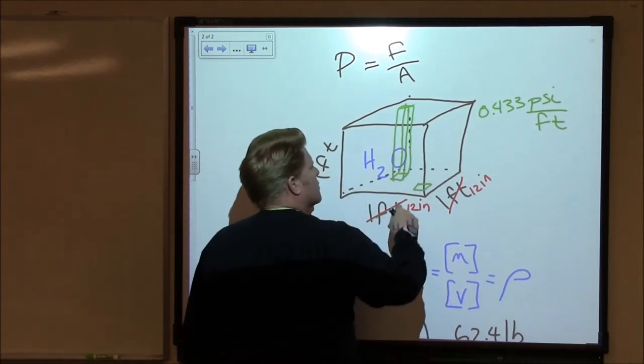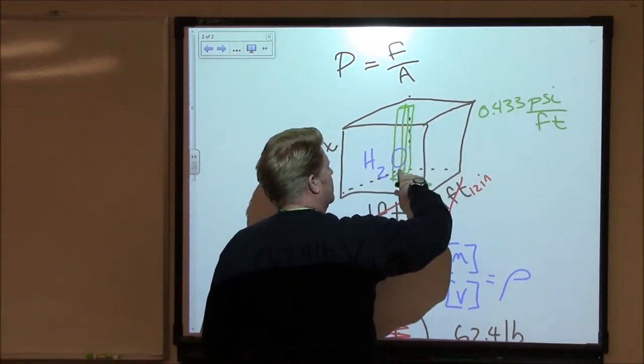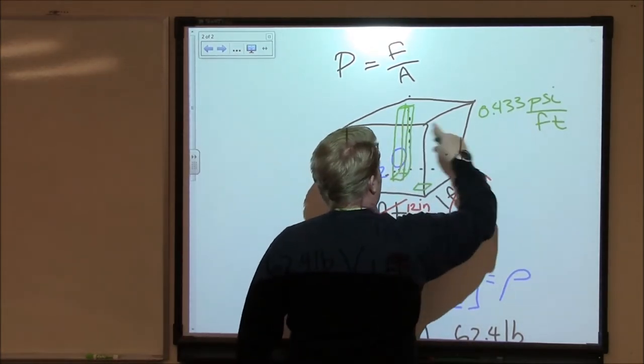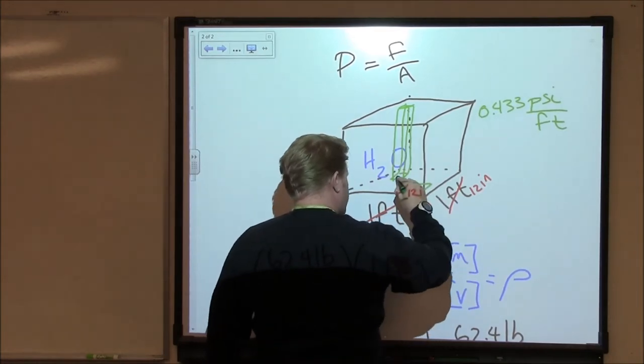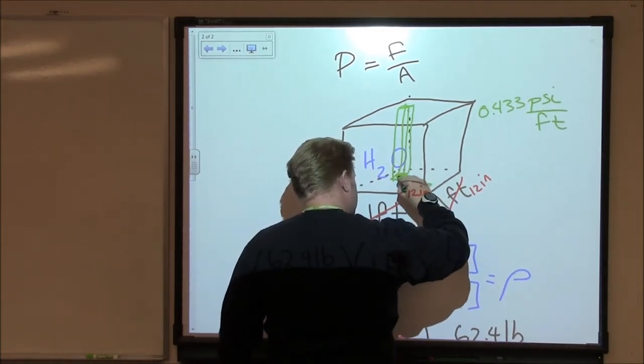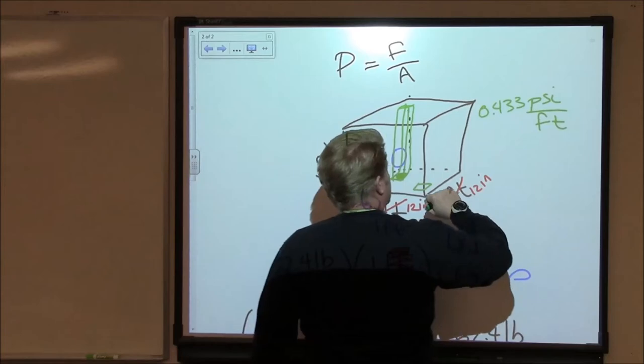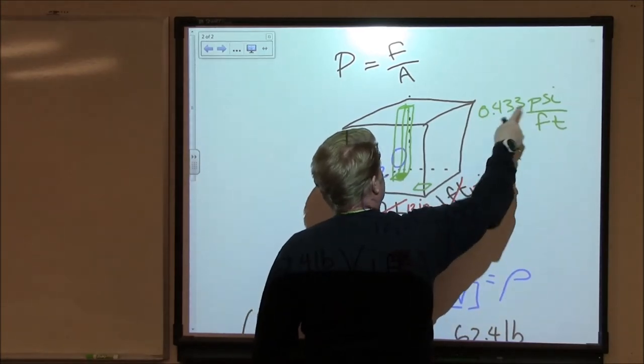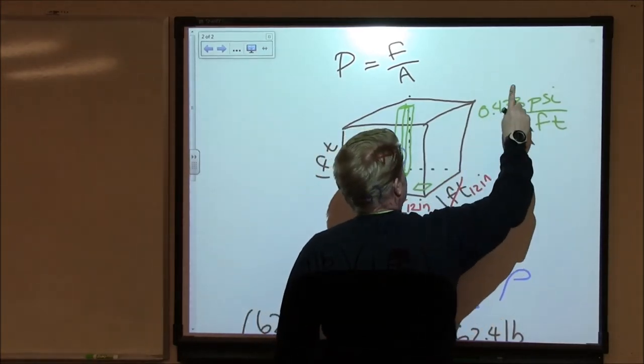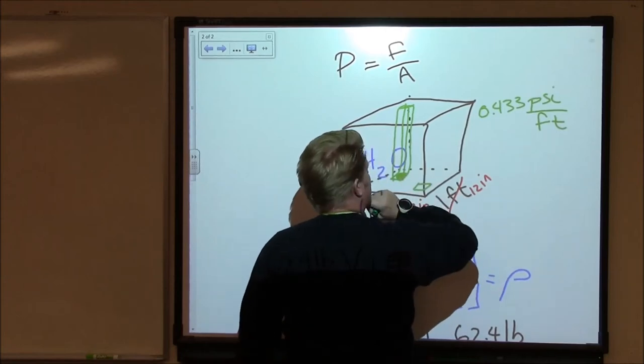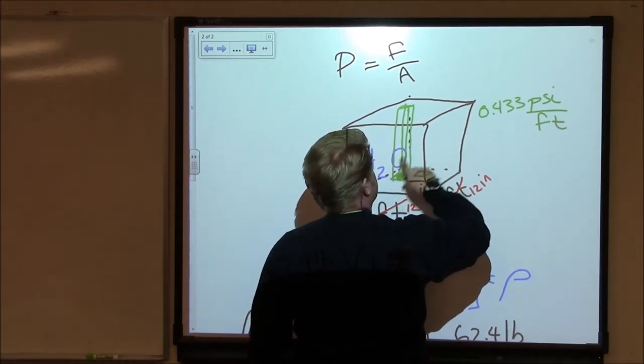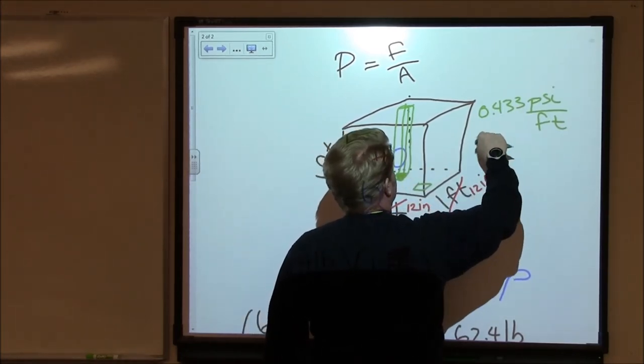Okay. So for a water column that's one foot tall, the pressure felt in this square inch would be 0.433 pounds. Or put it another way, the force felt in this square inch would be 0.433 pounds.